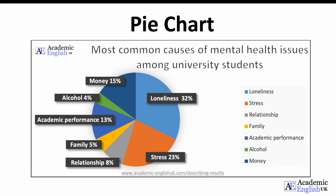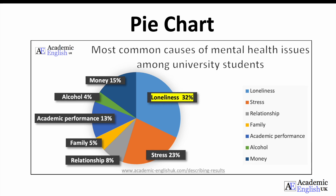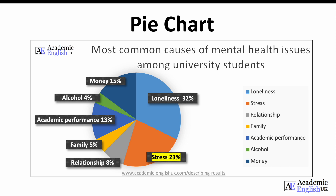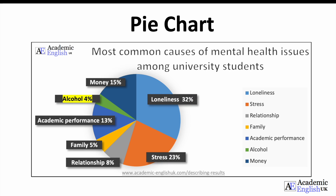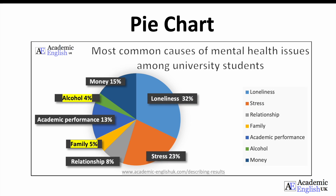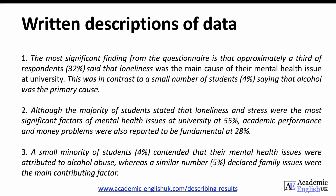Hopefully you have identified that loneliness is the main issue at 32%, closely followed by stress at 23%. Perhaps you also noted that these two issues account for over 50% of all the students. You may have also noticed that only a small minority of students were affected by alcohol at 4% and family at 5%. Now let's look at some written descriptions of the data. Pause the slide and read through these three descriptions of the pie chart and look to see if they are similar to anything that you wrote.